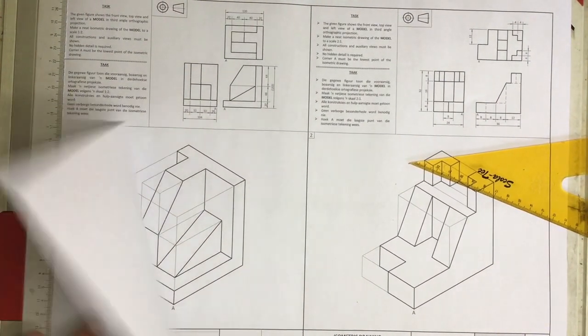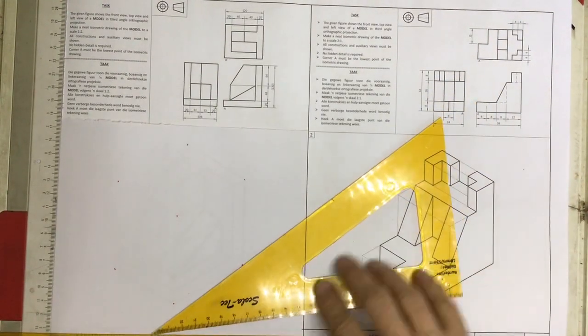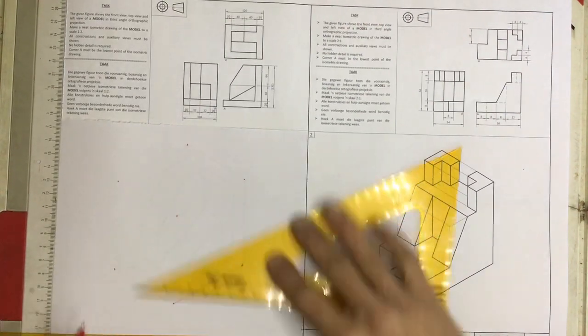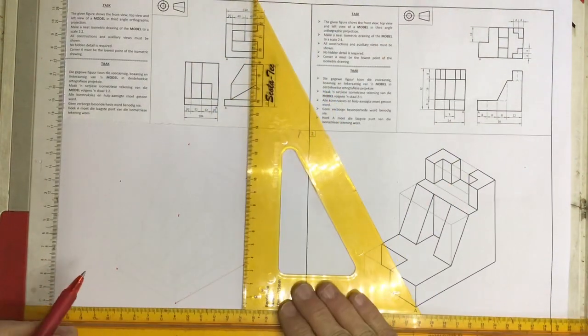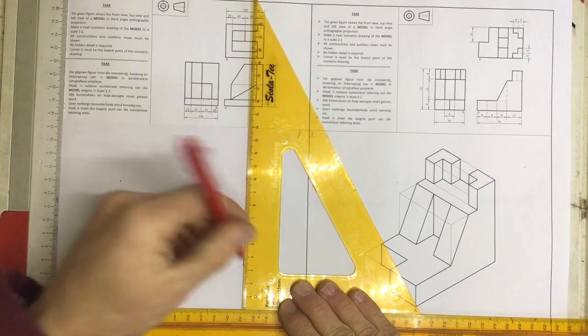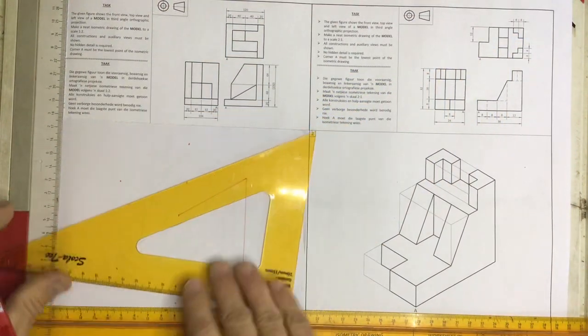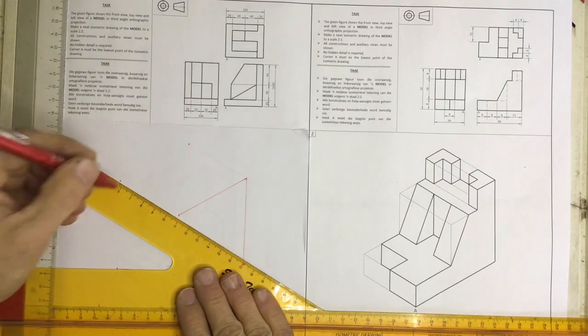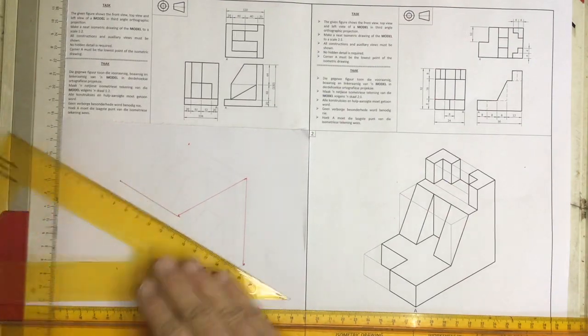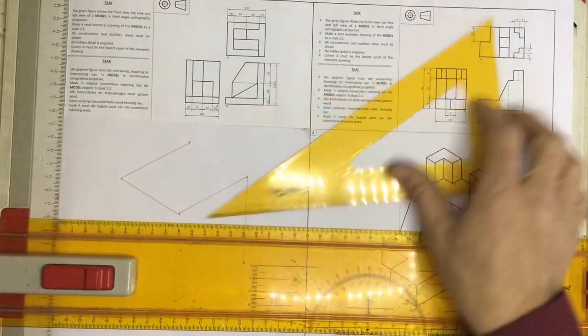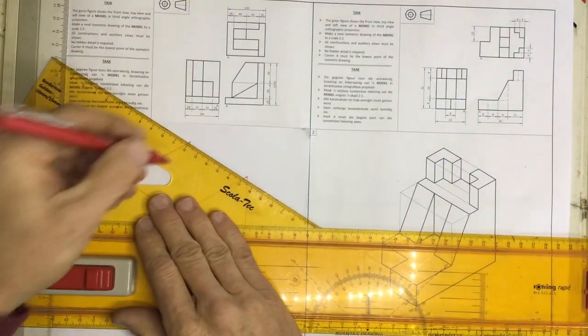Step number one: I always start by drawing a fish tank with the major dimensions - the length, breadth, and height of the object. At this stage you should know how to draw a fish tank, finding the length, breadth, and height.